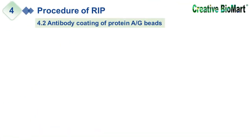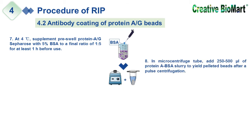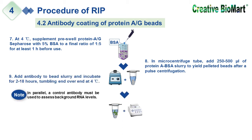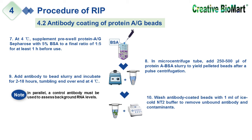Step 4.2: Antibody coating of protein A/G beads. Seventh, at 4°C, pre-swell protein A/G Sepharose beads in NT2 supplemented with BSA before use. Eighth, add protein A/BSA slurry to yield a pelleted bead after a pulse centrifugation. Ninth, add antibody to bead slurry and incubate for a few hours, tumbling end-over-end at 4°C. Note: in parallel, a control antibody must be used to assess background RNA levels. Tenth, immediately before use, wash antibody-coated beads with ice-cold NT2 buffer to remove unbound antibody and contaminants.